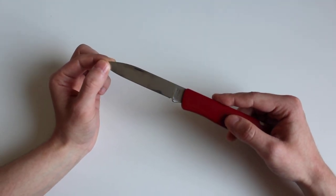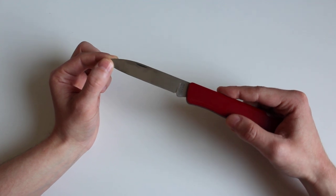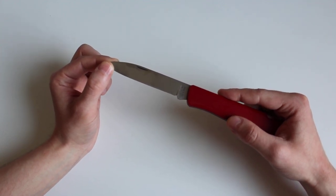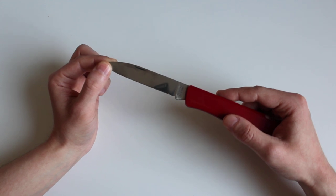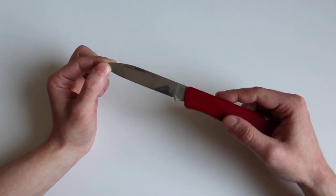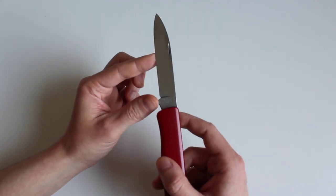The steel is X50 CrMoV 15, a German stainless steel tempered between 55 to 57 HRC. Simple and minimalistic design without any motifs on the blade, only stamped 'Made in Poland'.